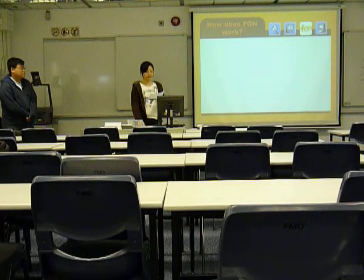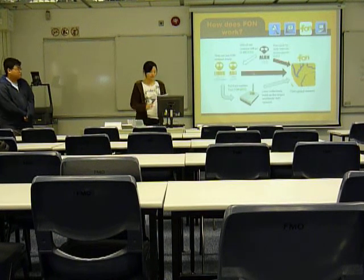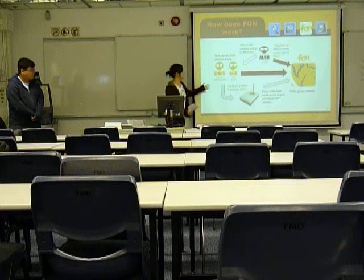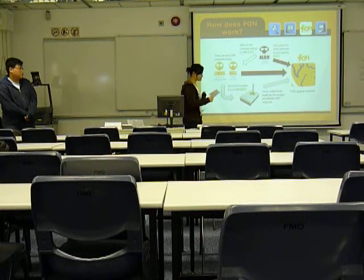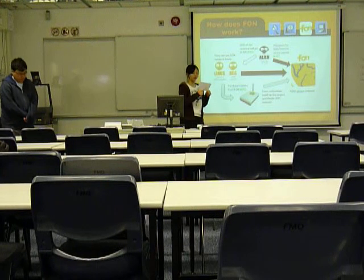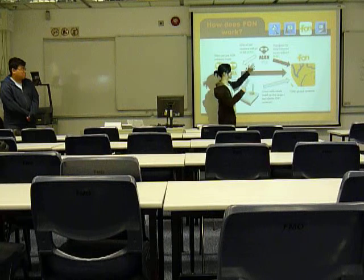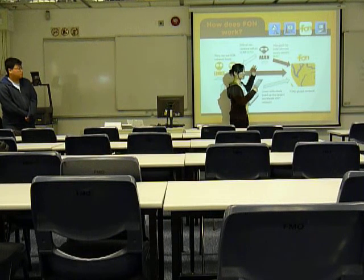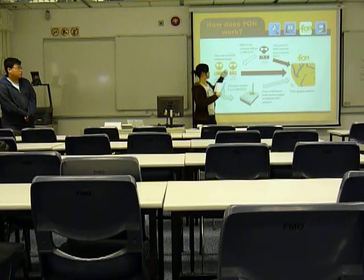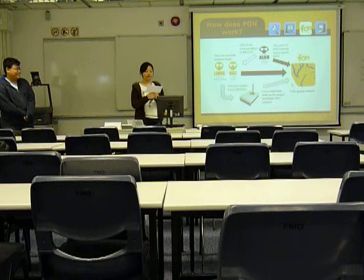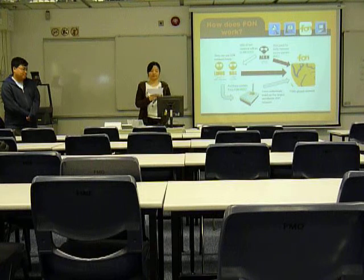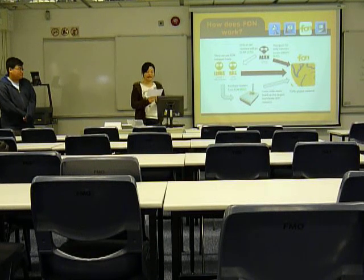Now let's talk about how FON earns its profit. FON earns profit when Linuses and Bills set up their routers, which is called a B2B connection. When Linuses and Bills set up a Wi-Fi network, Aliens are able to use the Wi-Fi network by paying a fee to both FON and Bill. Bill and FON then share the profit. This is how Linuses and Bills collectively build up FON networks, which forms the largest global Wi-Fi network.